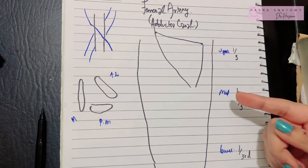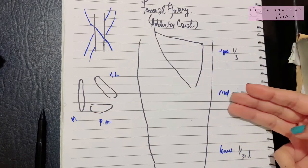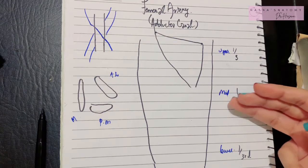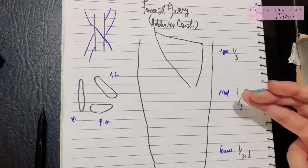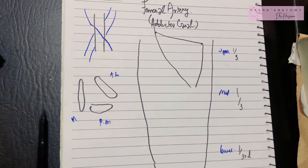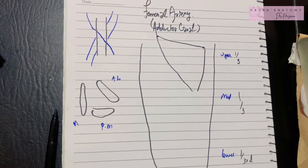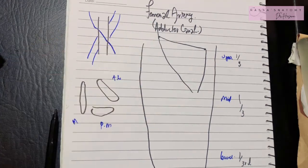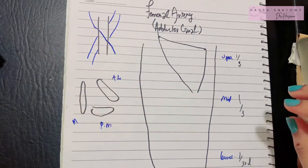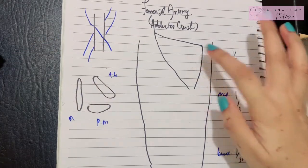Finally, the medial compartment of the thigh consists of a bulk of adductor muscles. These adductor muscles include the adductor longus, the adductor brevis, and the huge muscle called the adductor magnus. Now let's get started with our discussion of the femoral artery and the adductor canal.